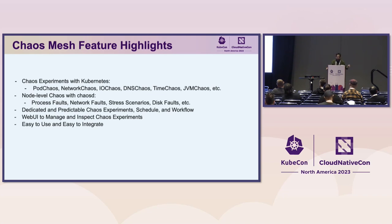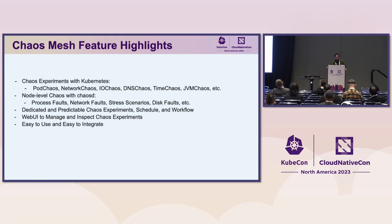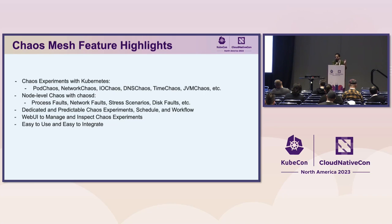Chaos Mesh also offers dedicated scheduled and predictable chaos experiments and workflow features — you can create your own workflows with different sets of chaos experiments. It has a web UI to manage and inspect all chaos experiments. The design goal has always been to make it easy to use, regardless of whether you're a beginner or expert. Every chaos experiment has a separate Custom Resource Definition, so you can simply understand: for this type of chaos, these are the parameters you need to set.